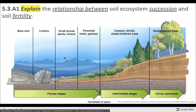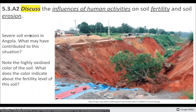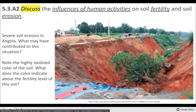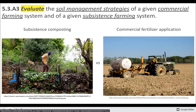So some things you should be able to do: explain the relationship between the soil ecosystem, succession, and its fertility — how do the layers of soil change, and how do nutrients change as organisms die, decompose, and get recycled? Discuss what humans do to soil in a really holistic sense — not only the negative things, but also how we increase soil fertility and reduce soil erosion. And you should be able to evaluate soil management strategies of commercial farming systems — how do industrialized systems compare to more subsistence-based systems?